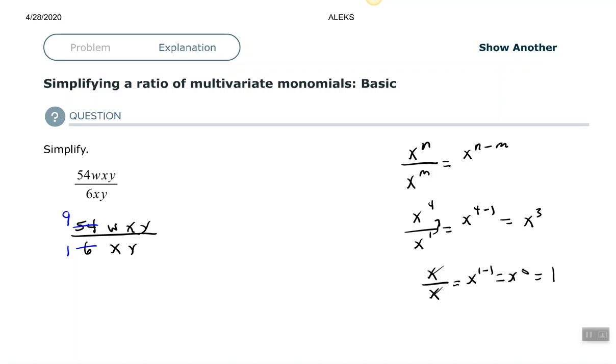But we also have an X in the numerator and an X in the denominator and a Y in the numerator and a Y in the denominator. So X to the first in the numerator with an X to the first in our denominator, they will cancel each other out.